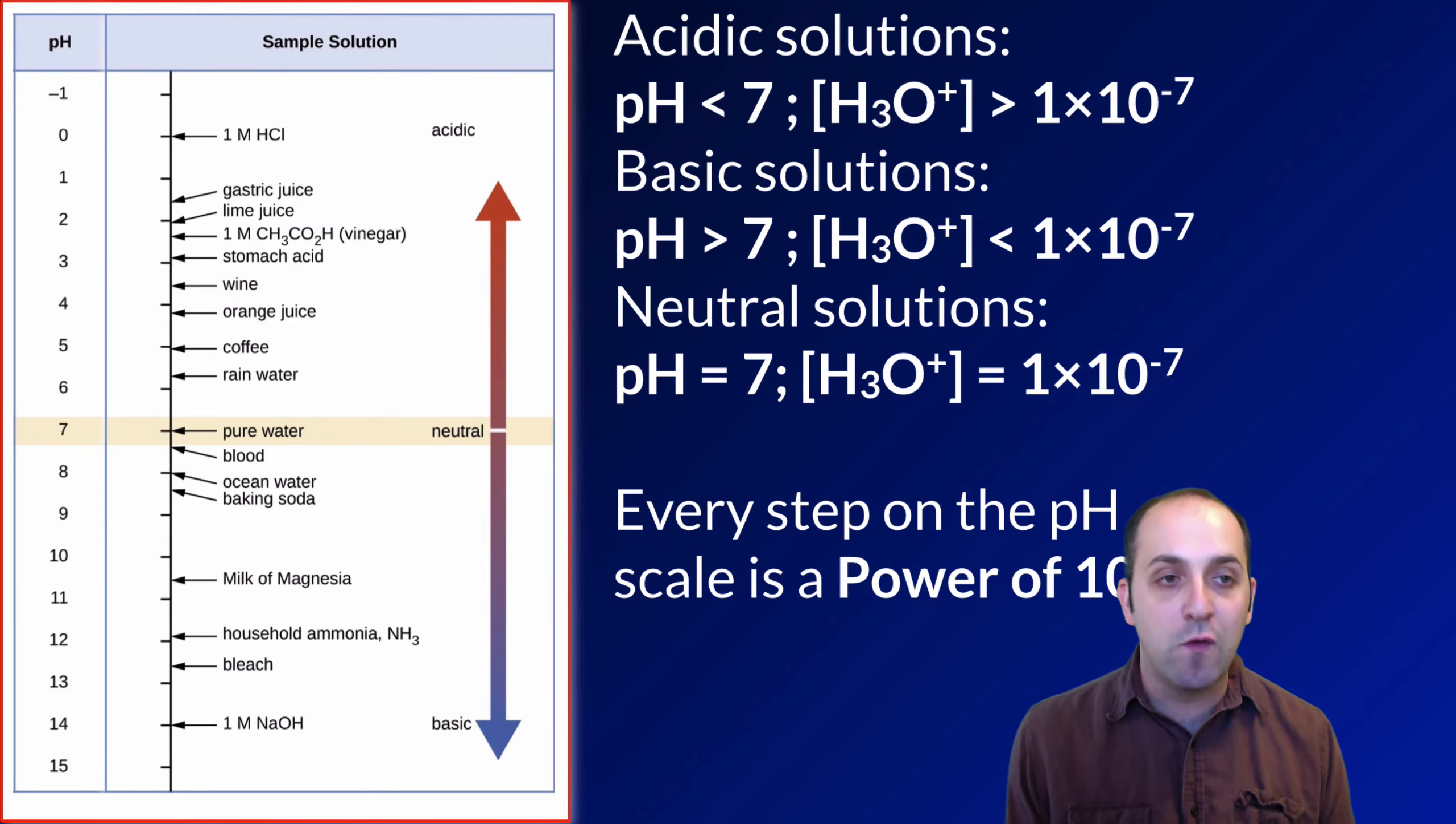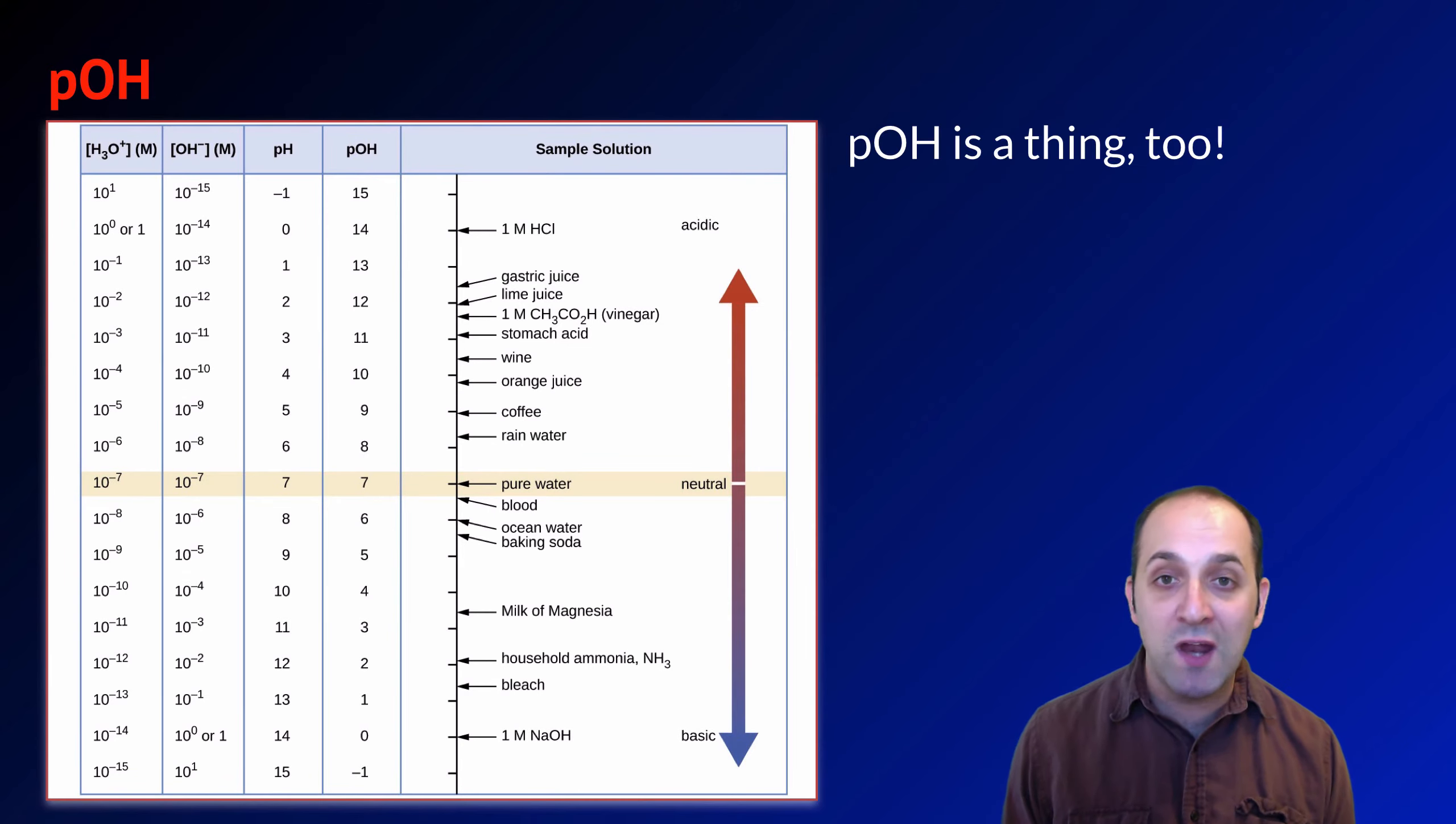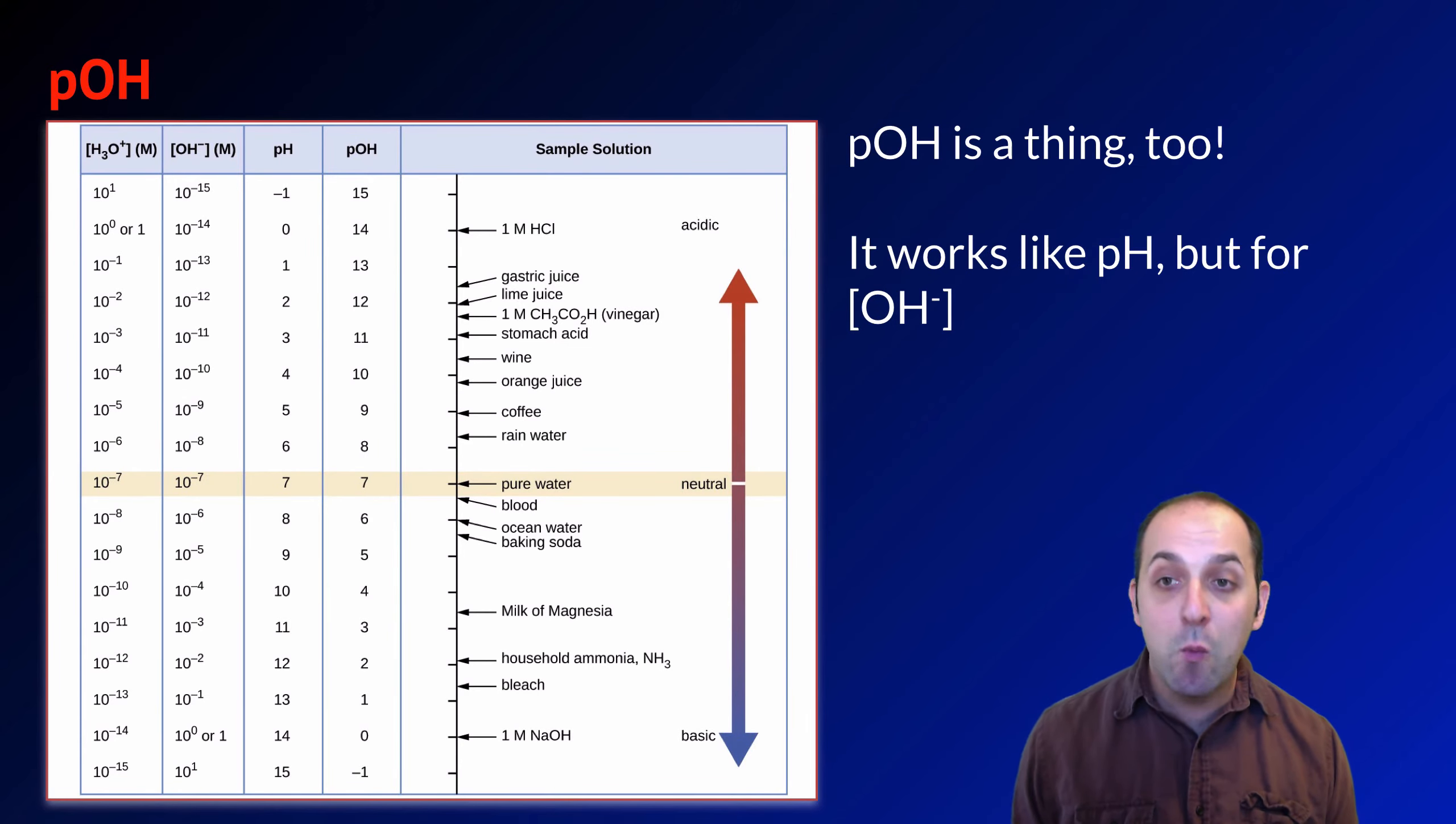This representation of the pH scale over on the left shows the different pH values, and you can see different characteristic solutions that are listed on each of these. Another point that I'll make here is that pOH also exists. It works just like pH, but for OH minus. Remember that pH plus pOH has to equal 14 because the concentration of protons times the concentration of hydroxide ions always equals 10 to the negative 14.